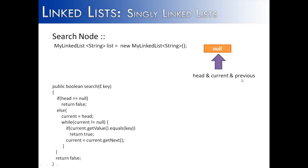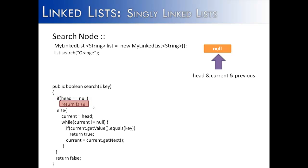If head, current, and previous are all equal to null and we make the call list.search orange, orange is obviously not in the list because there is no list. The code would say if head is null, which head is null, we would return false, indicating that orange is not in the list.